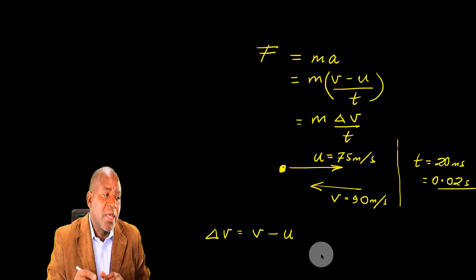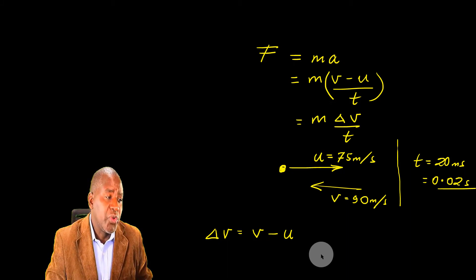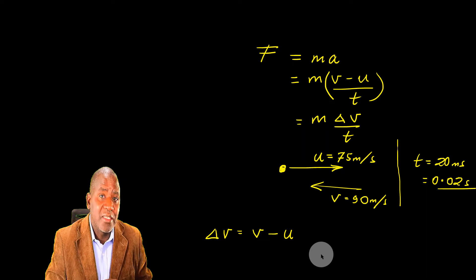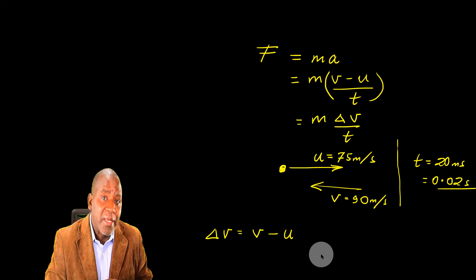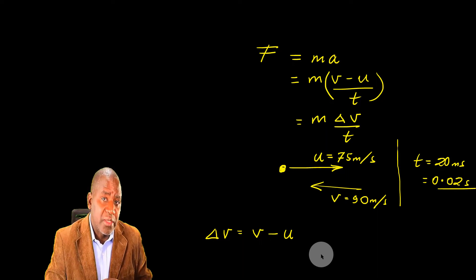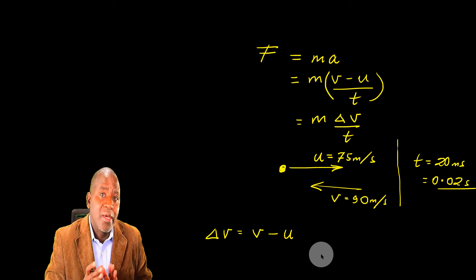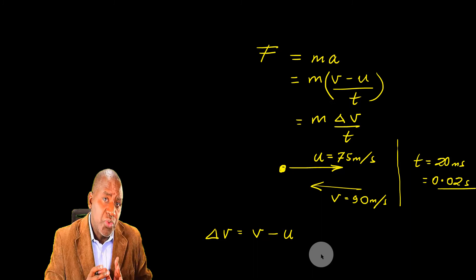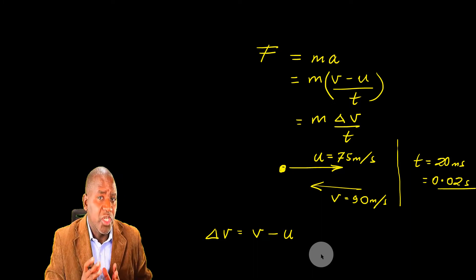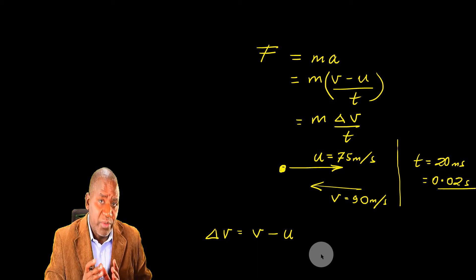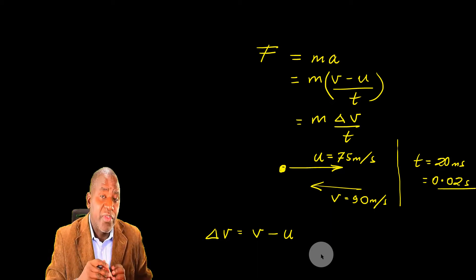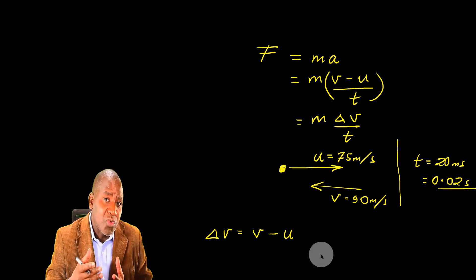This is where most students have a problem. Most of them will do 90 minus 75 to get 15 and they think that that is the change in velocity. No, that is not the change in velocity. It is change in speed. There is a difference between speed and velocity. I want just to stick to velocity. But if you have been asked to calculate change in speed, it will be 90 minus 75, which will be 15 meters per second. That is not how to approach the question. I've got to get change in velocity.